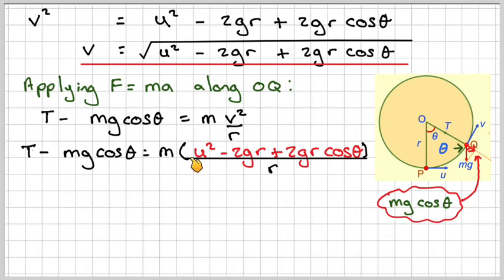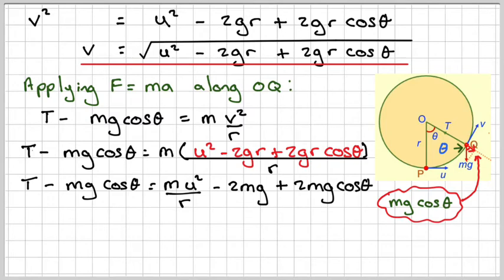Now, multiplying by M and dividing by R, we're going to get MU squared over R. And then the R's will cancel out. So, the M will go in. It'll become 2M G plus 2M G cos theta, the R's cancelling out.